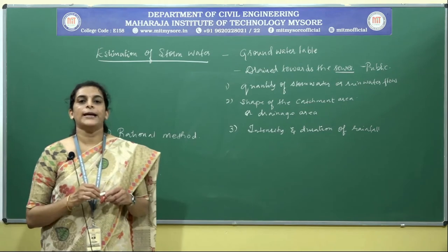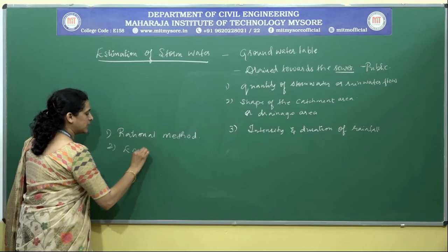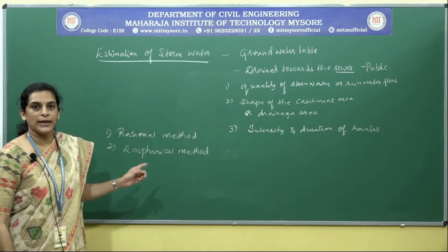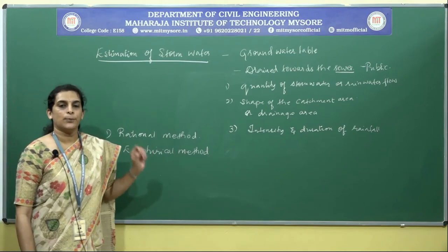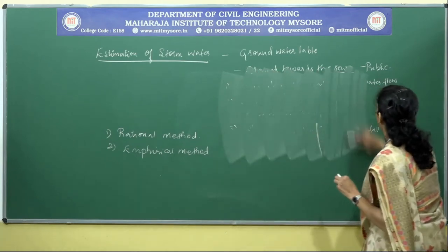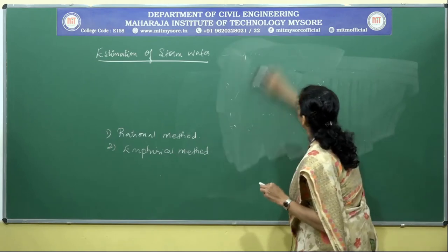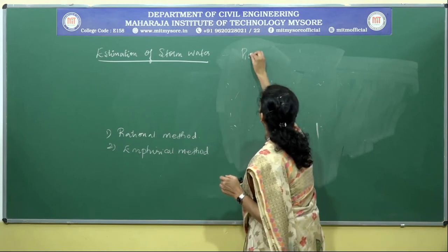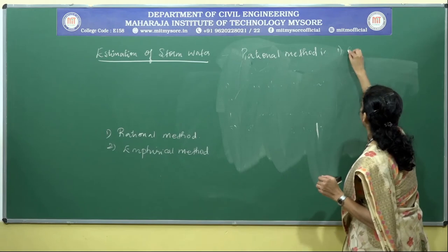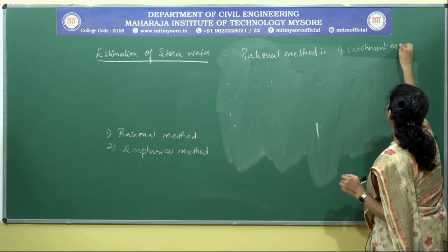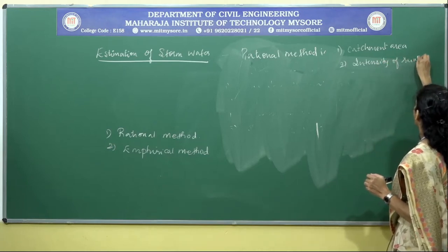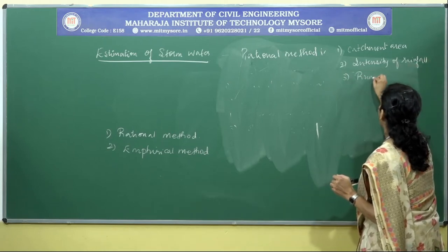Storm water can be estimated by two methods: the first method is the rational method, and the second method is the empirical method. In order to estimate the storm water by the rational method, we have to consider certain factors: the catchment area, intensity of rainfall, and the runoff coefficient.